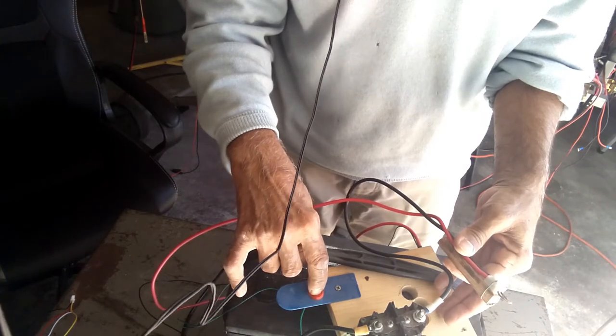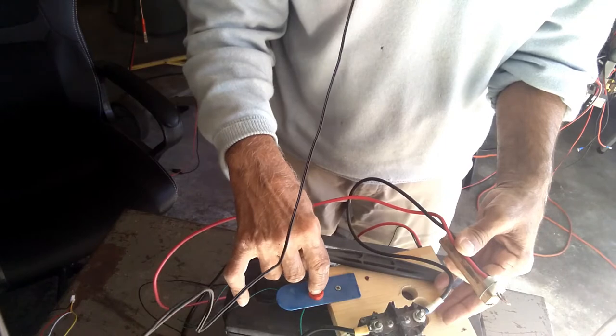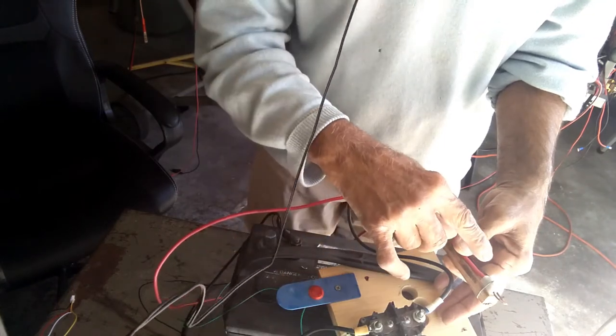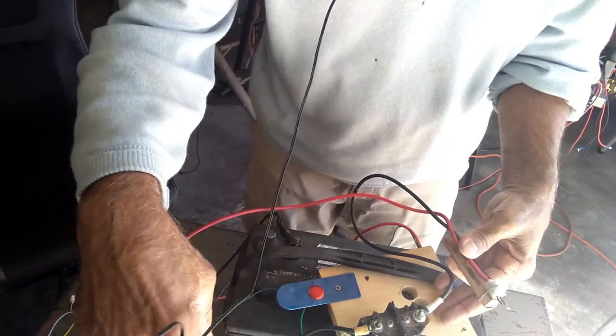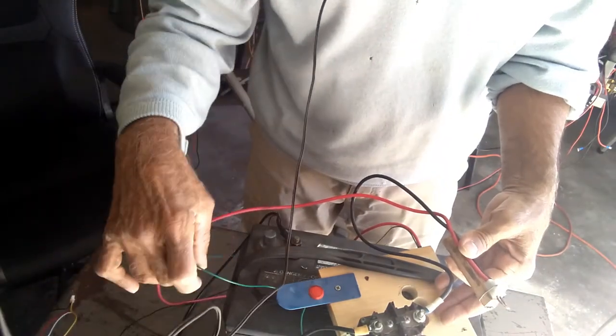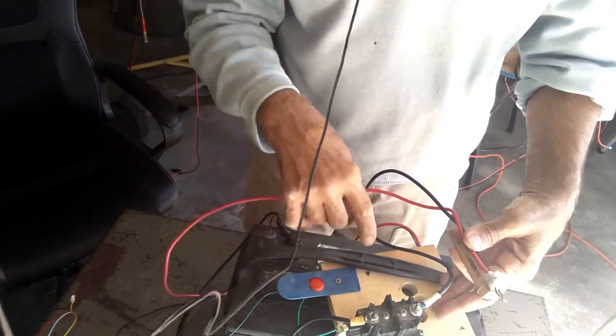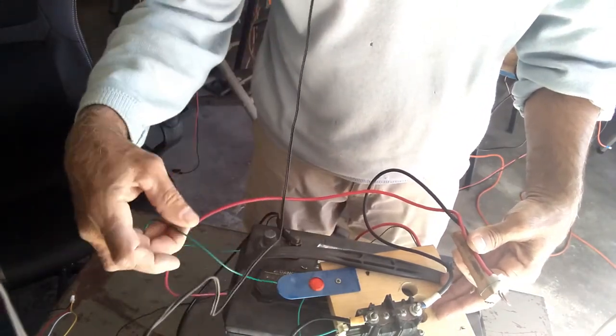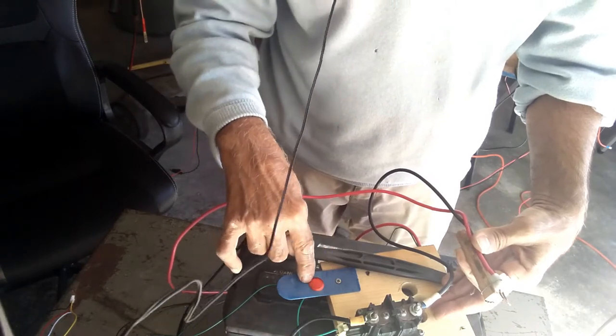As you press it, it stays on and then goes off. So you just press it a little bit and release it. These are the two wires, positive and negative from the contactor which will go up into the battery. And the negative wire I used to go through the momentary on-off switch.